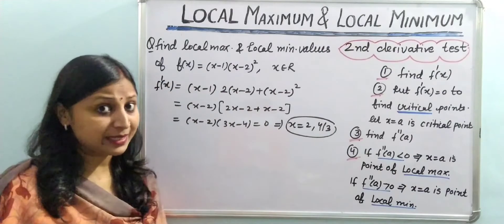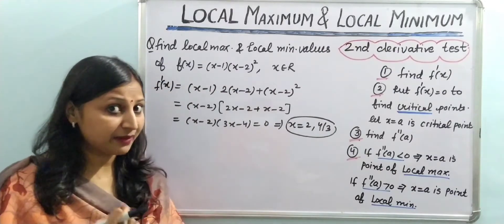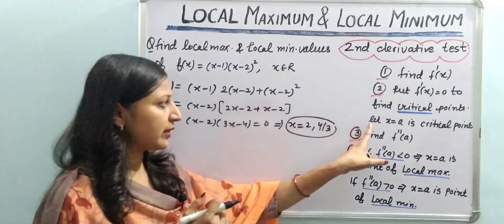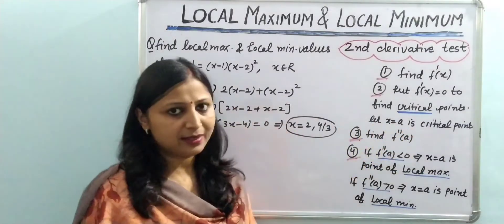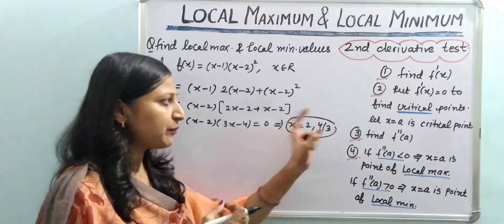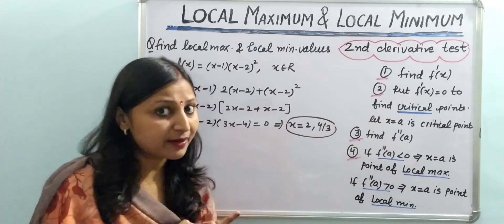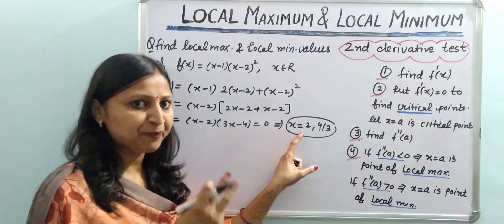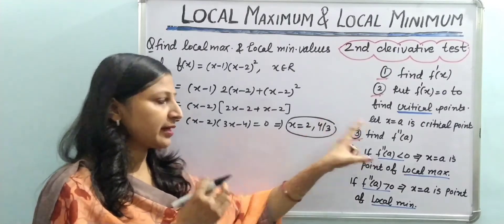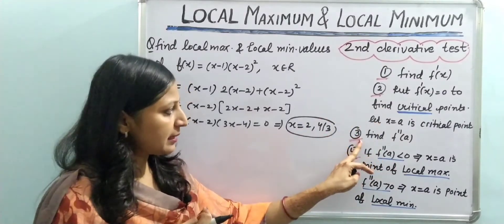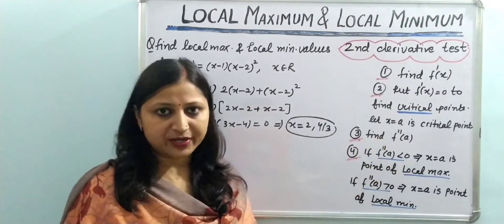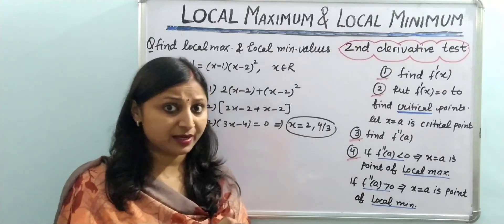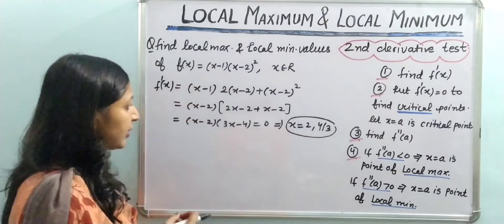Now the third step — because this is called the second derivative test, we will work with the second derivative. We have two critical points. Let x = a be a critical point. The third step is to find f''(a), that is, we have to find the value of the second derivative at each critical point.